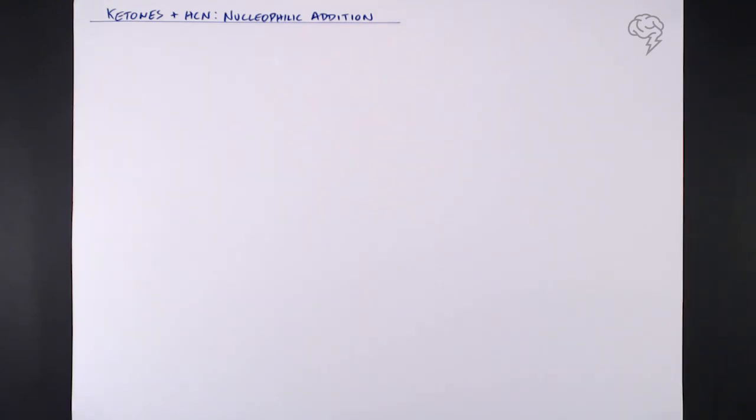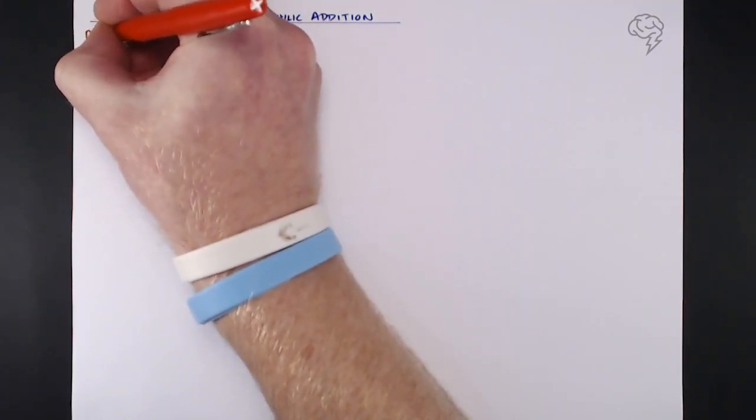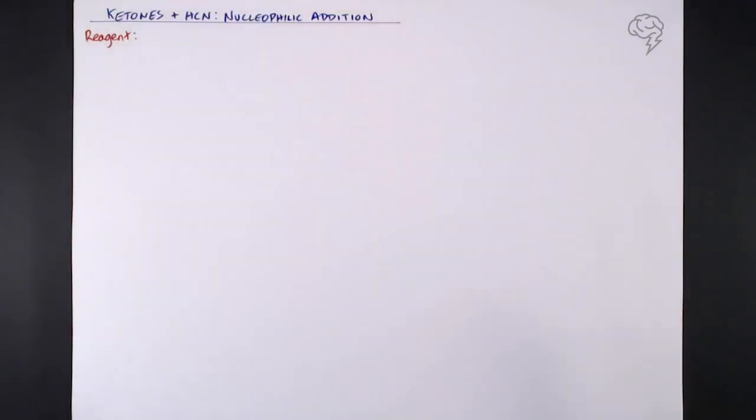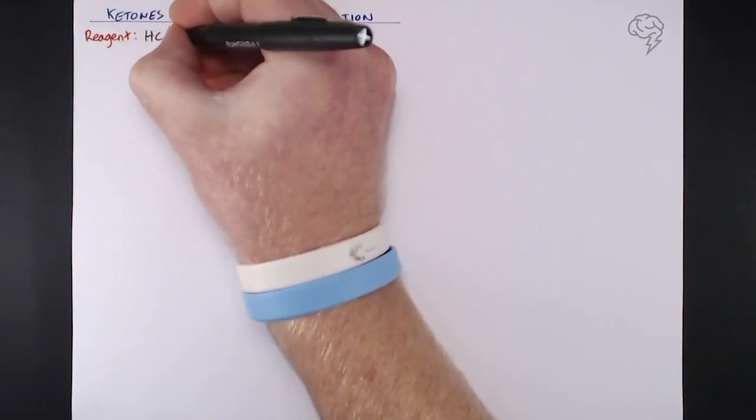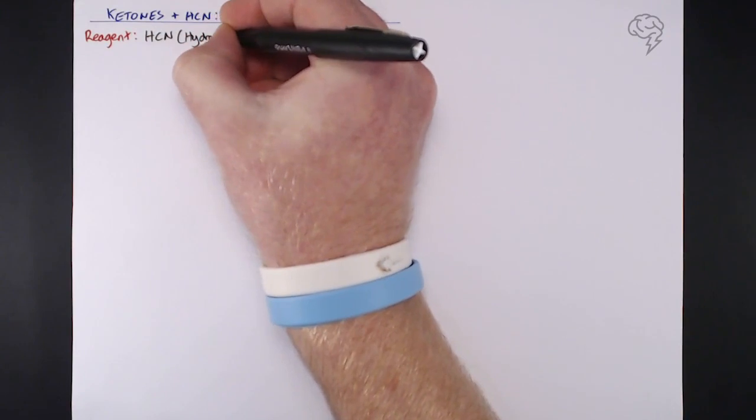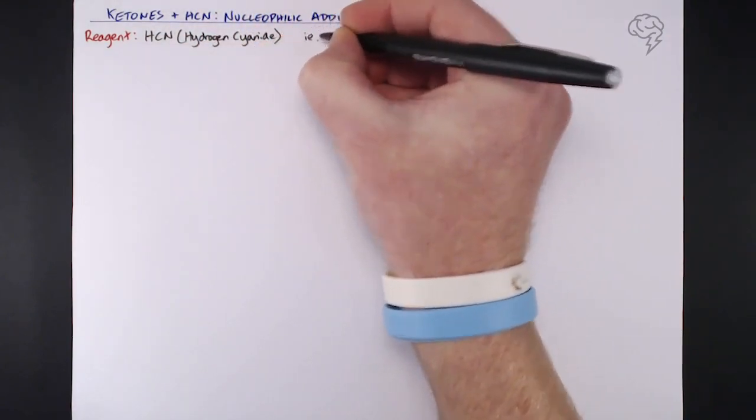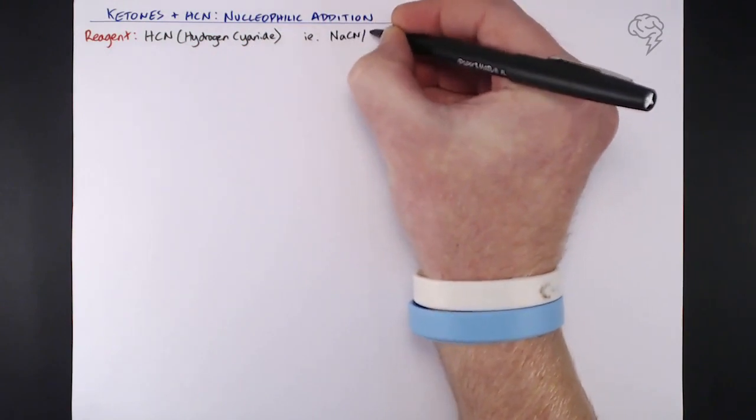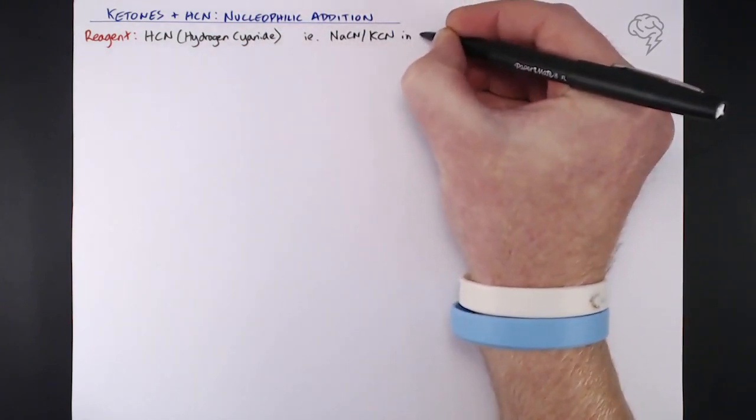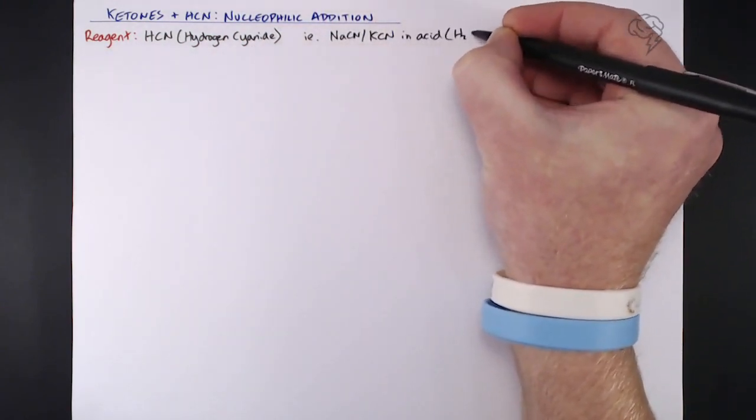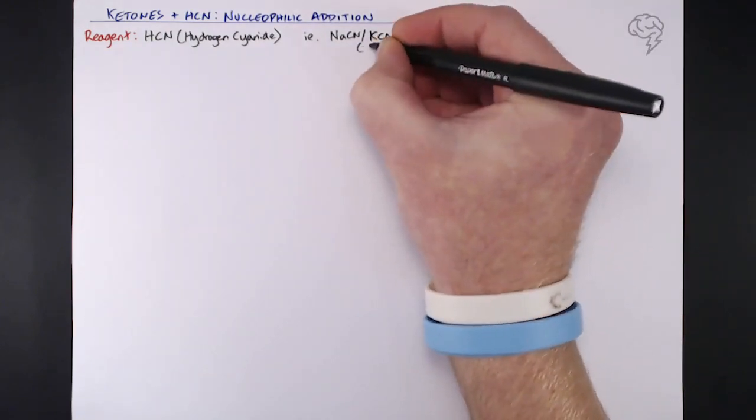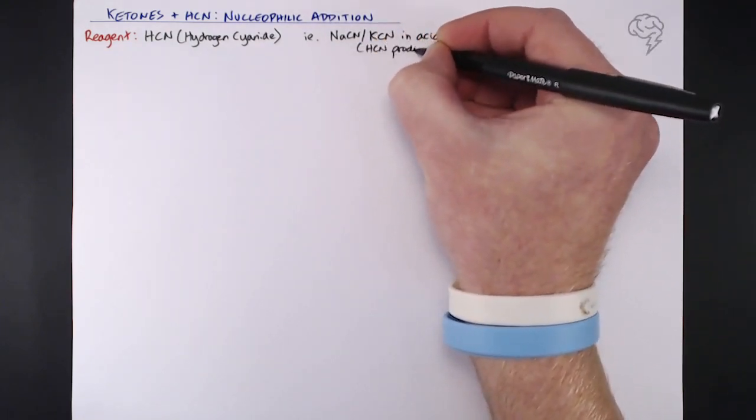The reagent is hydrogen cyanide. Because it's highly toxic, we produce it in situ in the reaction itself. We put a mixture of either sodium cyanide or potassium cyanide in acid, usually H2SO4, and when those two combine, HCN is actually produced in situ.